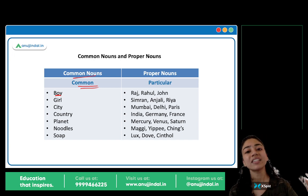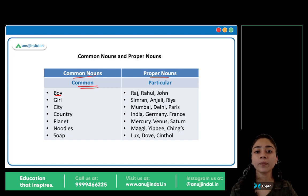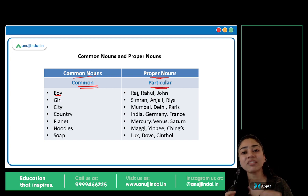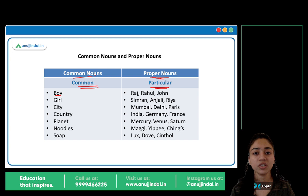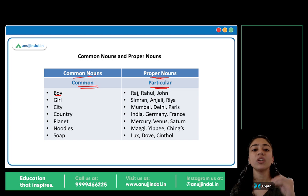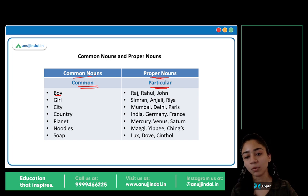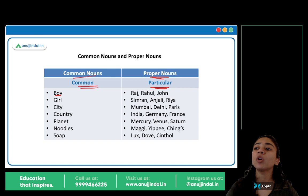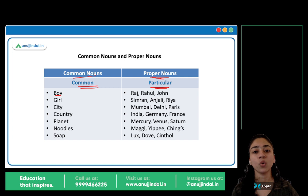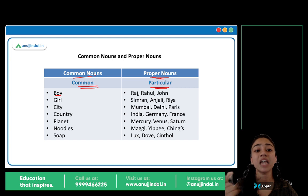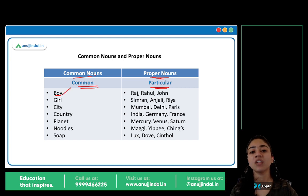Names which are common, names which are the same for all. So, the proper nouns are particular and specific names — like Rohan. This is our proper noun. A particular or specific name. So, boy is common. But Raj, Rahul, John, Rohan, Ajay, Vijay — whatever it is, these are our proper nouns.